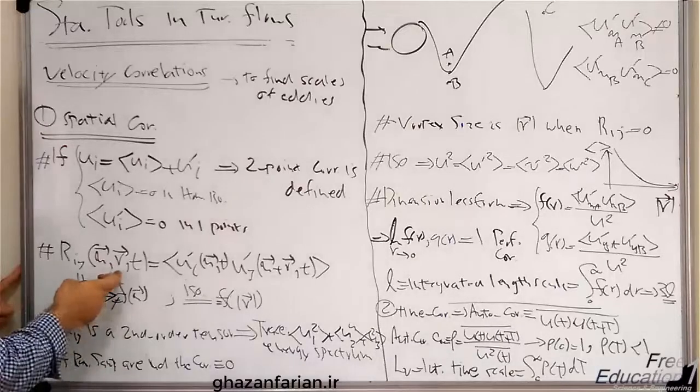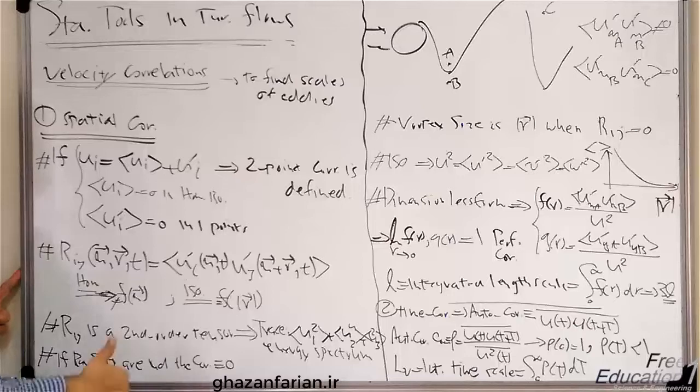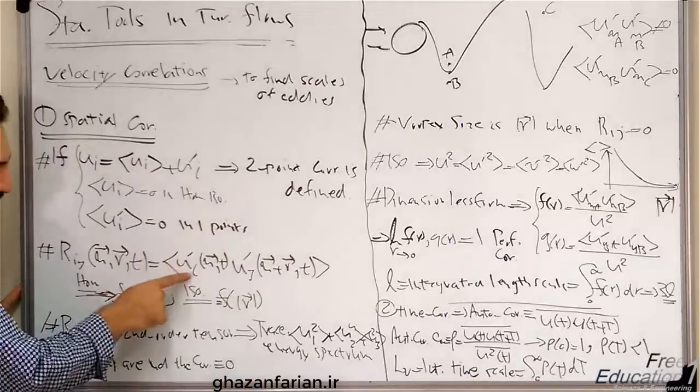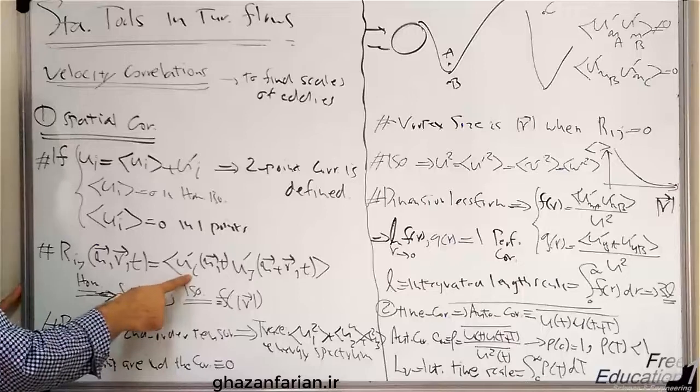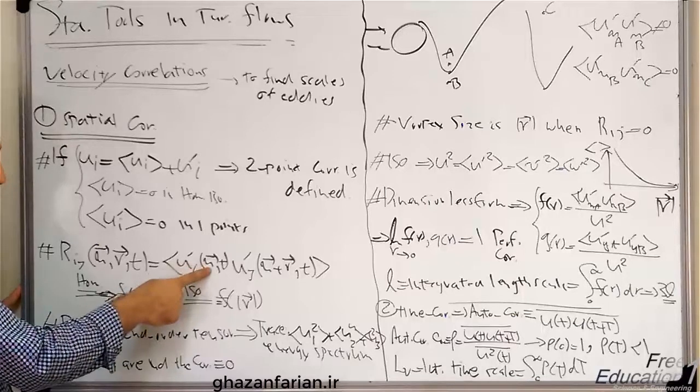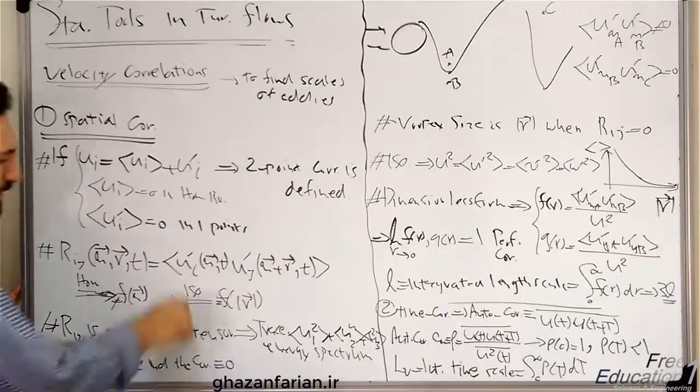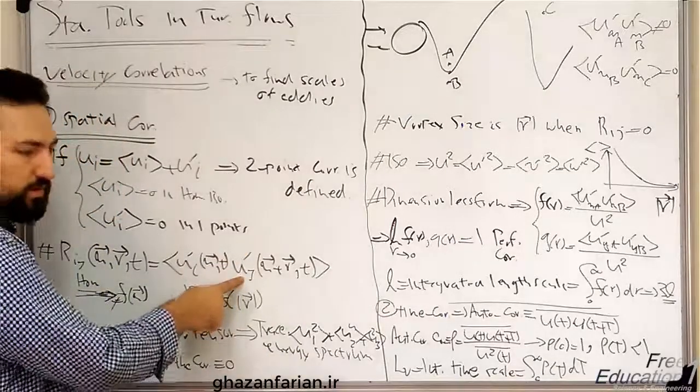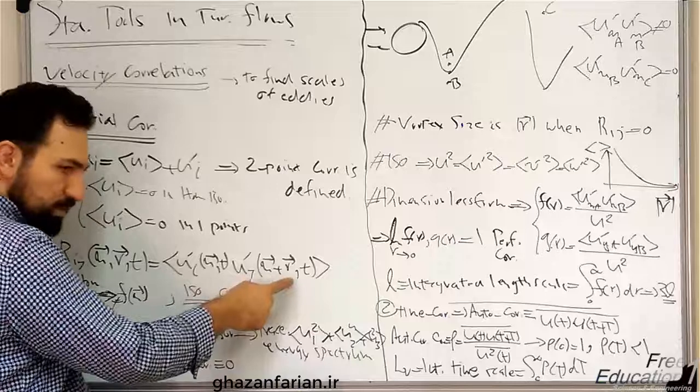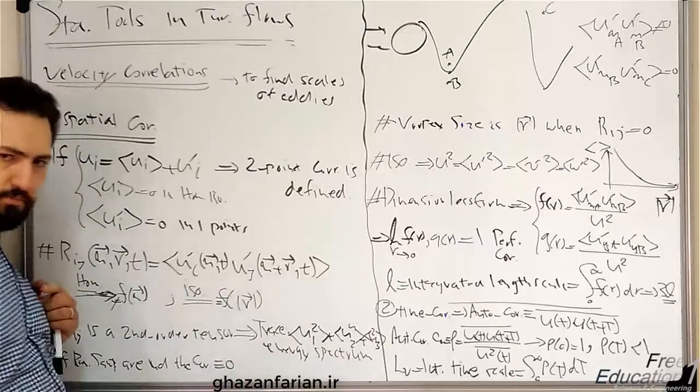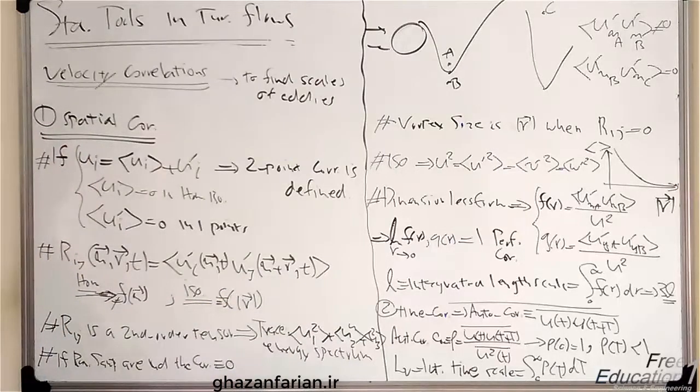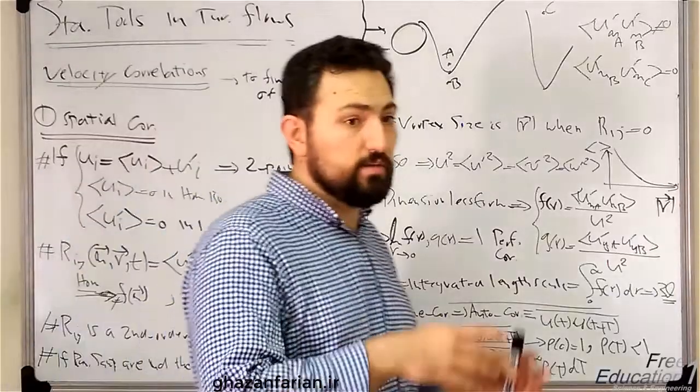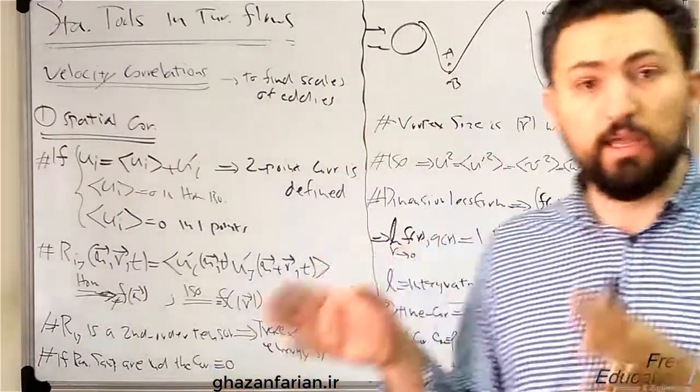is defined as the ensemble average of the fluctuation of the x_i component of the velocity at point x and time t, times the fluctuation of the j component of the velocity at point x plus r and t at time t. This is the definition of the velocity special velocity correlation.